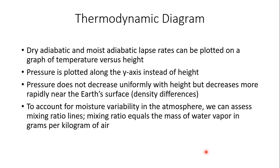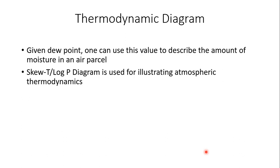To account for moisture variability in the atmosphere, we can assess something on the Skew-T Log-P diagram known as mixing ratio lines. Mixing ratio basically equals the mass of water vapor in grams per kilogram of air. Dew point is a measure of the amount of moisture in the atmosphere — it's in degrees Fahrenheit, similar to air temperature. One can use the dew point value to describe the amount of moisture in an air parcel.